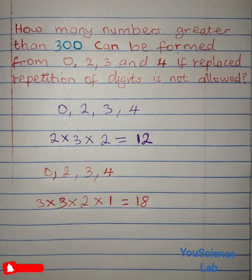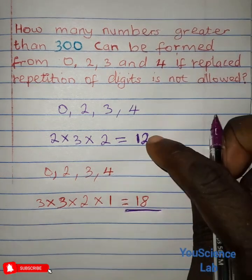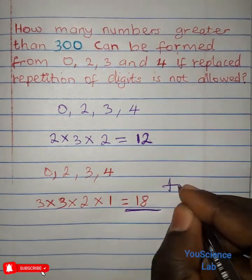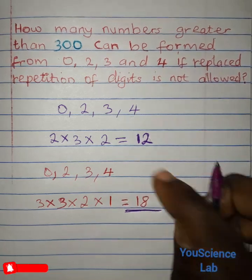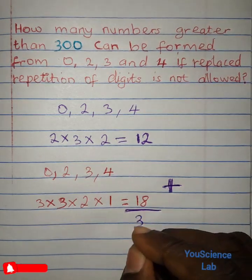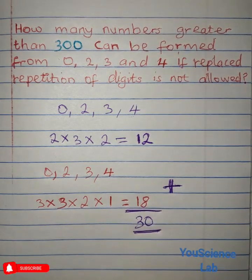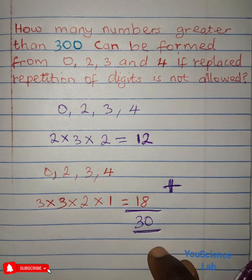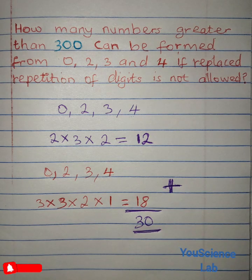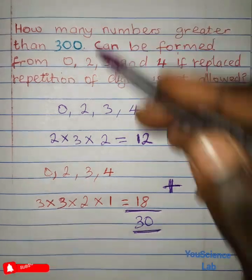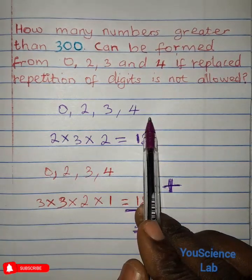Then the total number of digits is going to be 12 plus 18 and that is going to give us 30. So we can form 30 numbers which are greater than 300 from these 4 digits.